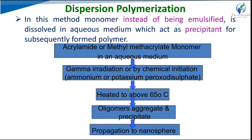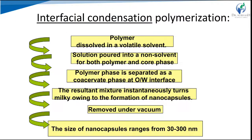In dispersion polymerization, the monomer dissolves in aqueous medium rather than being emulsified, and then precipitates as a polymer. Acrylamide or methyl acrylate monomer in aqueous medium undergoes chemical initiation or gamma radiation, and heat is applied to cause oligomer aggregation and precipitation, resulting in formation and propagation of nanospheres or nanoparticles.